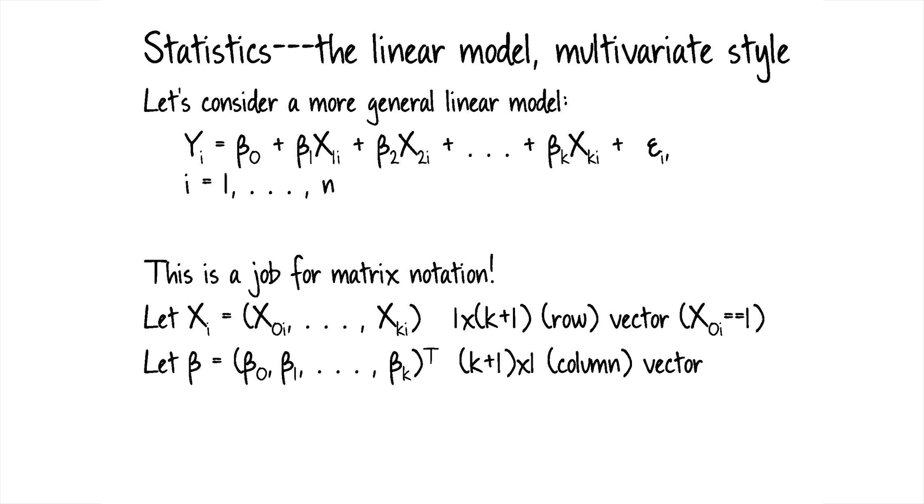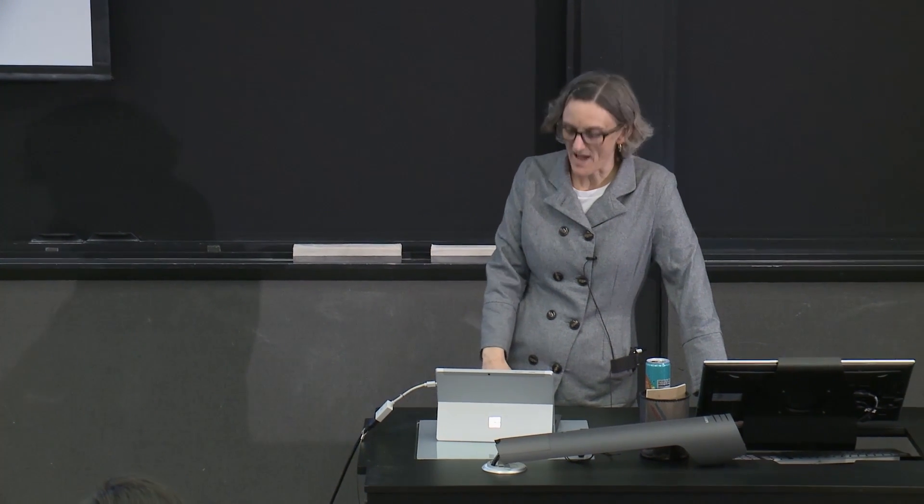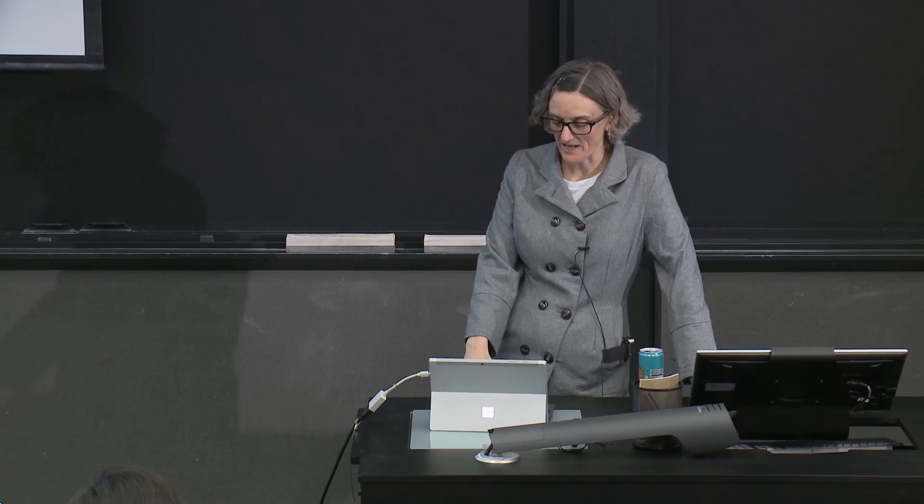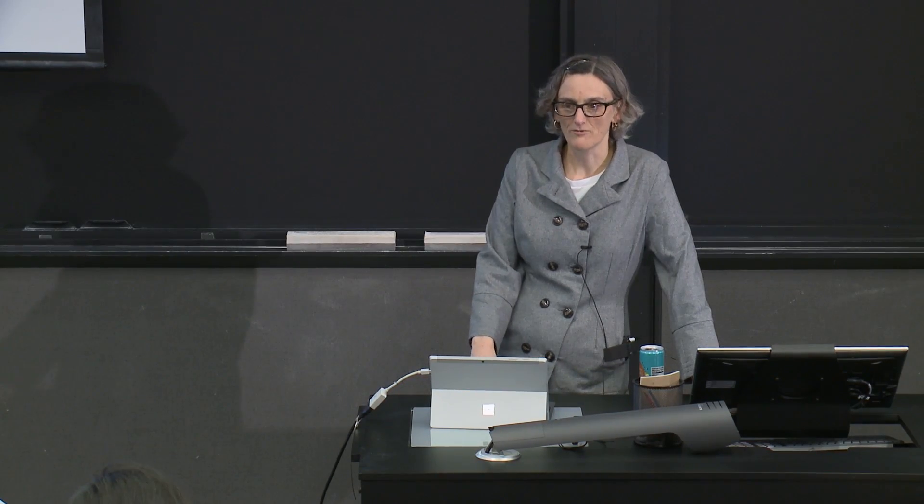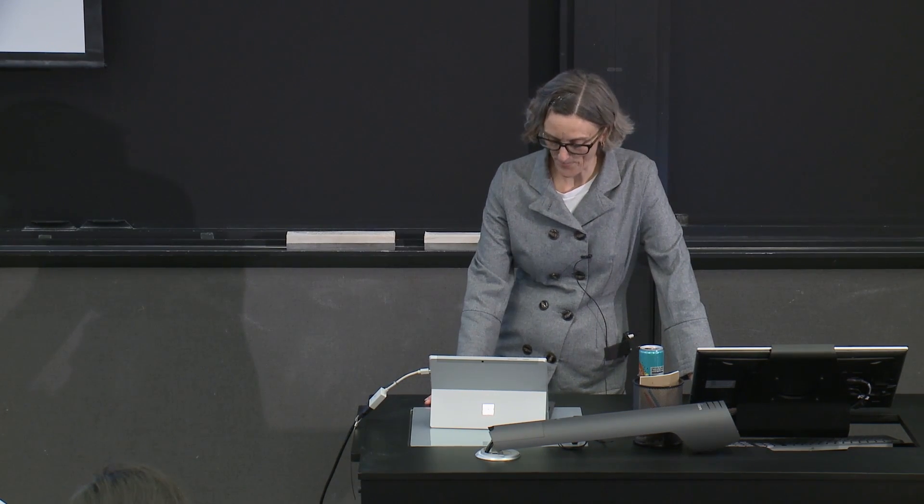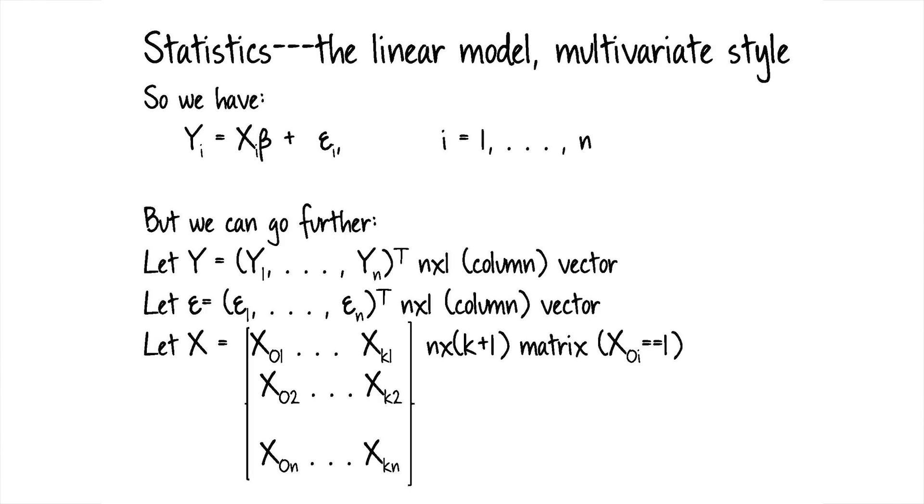And so let's replace this whole parade of X's with a row vector. And so for each observation, we have a vector of different measures: X naught up through X sub k for each observation. And then let's also replace all of the betas that multiply all of these regressors by a vector, in this case a column vector, a k plus 1 by 1 column vector of parameters beta. And then that lets us use a much more condensed notation for our multivariate linear model. And it's just Y sub i equals X sub i beta plus epsilon sub i.